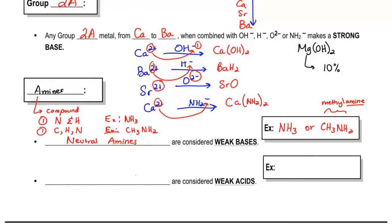And we're going to say next that positively charged amines are considered to be weak acids. So here we could have NH4 positive which is ammonium. This is ammonia. Ammonium is positive so it's a weak acid, or CH3NH3 positive, this would be methylammonium.